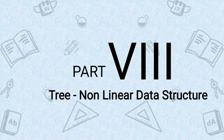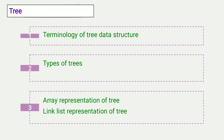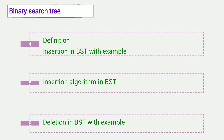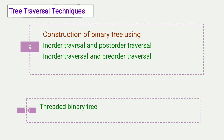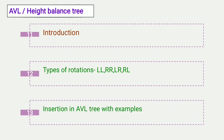In part eight we will learn tree, which is an example of a non-linear data structure. We will learn terminology of tree, types of trees, and array and linked list representation of tree in the first, second, and third videos. Then we will learn binary search tree — its definition, insertion and deletion with example and algorithm. Next we will learn tree traversal techniques: in-order, post-order, and pre-order, with examples and algorithms. Then I will give a numerical on construction of binary tree using in-order and post-order traversal, and using in-order and pre-order traversal.